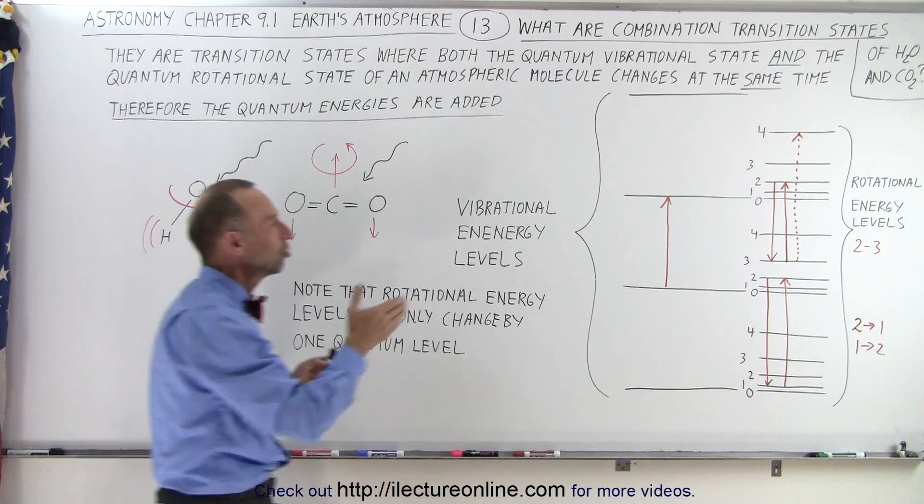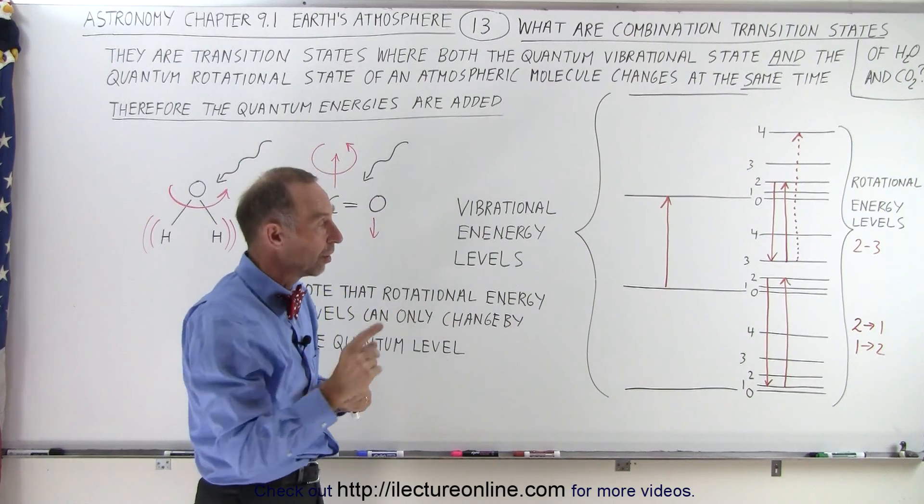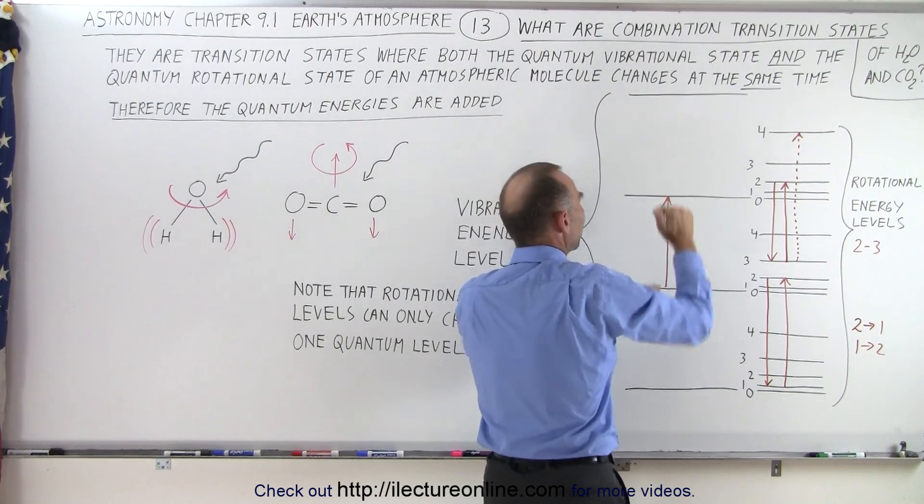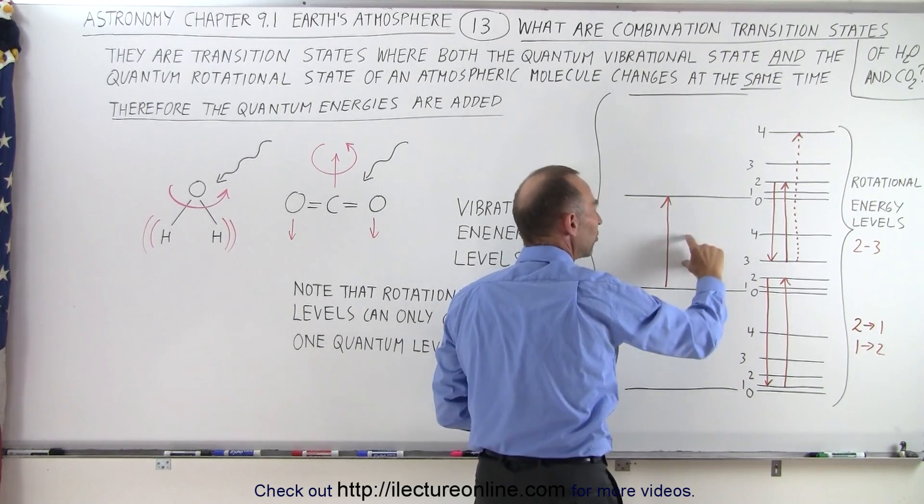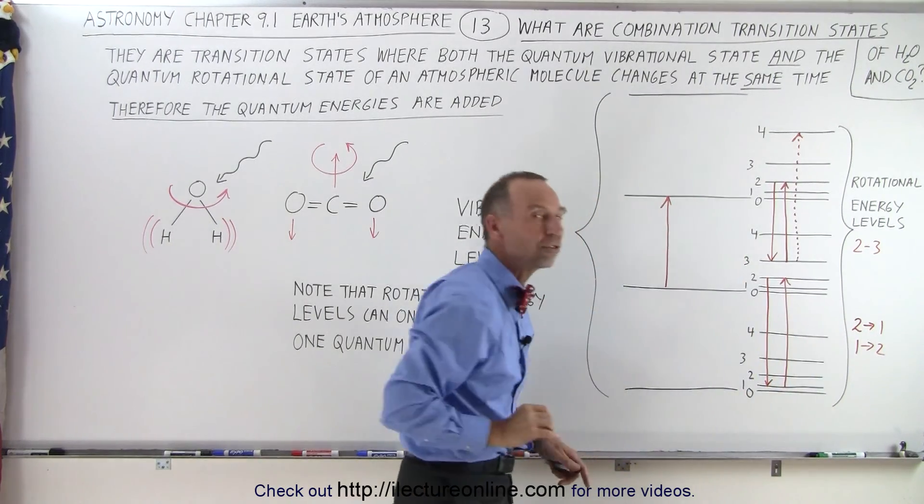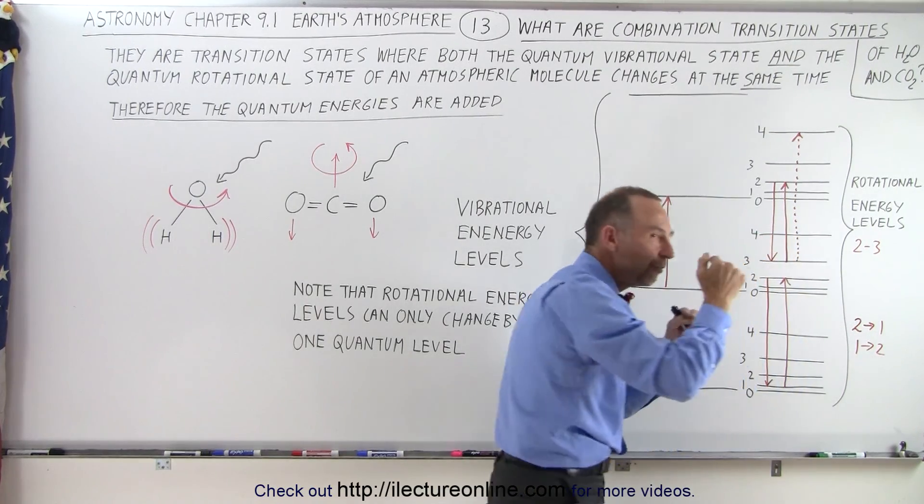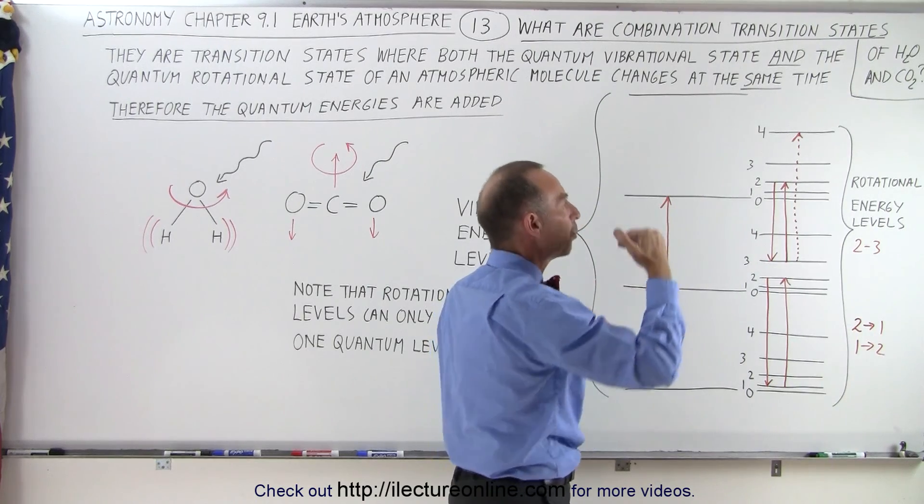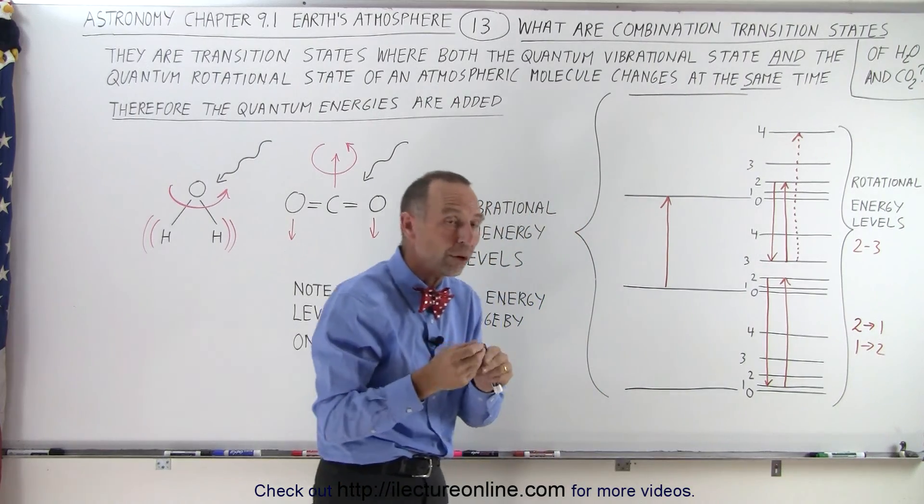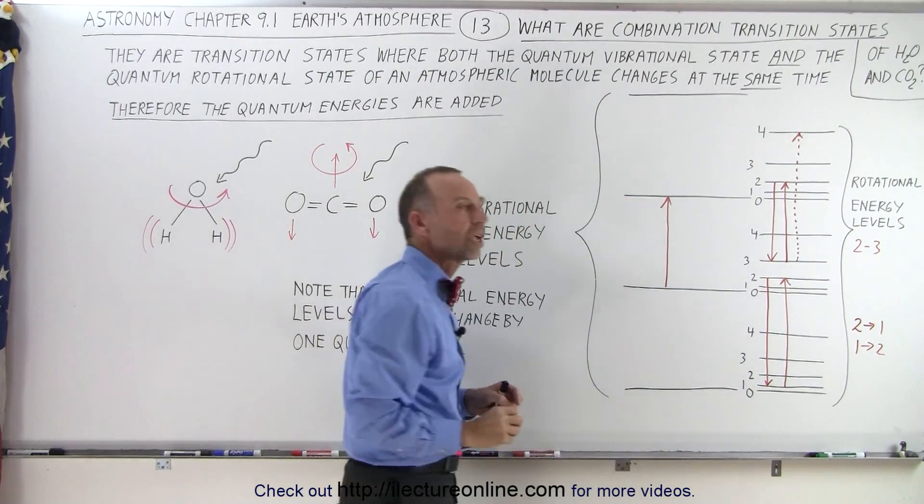But combined to the change in the vibrational energy level, you can now see that there can be a lot of different combinations, especially since the energy level between the vibrational states are fixed. The delta energy, the change in energy is always the same, no matter which energy level we jump to, but that's not the case for the rotational energy levels. As we jump from one to two, or from two to three, or from three to four, each difference is different depending upon where we started and where we ended, and because of that there's a lot of different combinations of energies that can be absorbed to combine the change in energy of the vibrational mode and the change in the energy of the rotational mode.